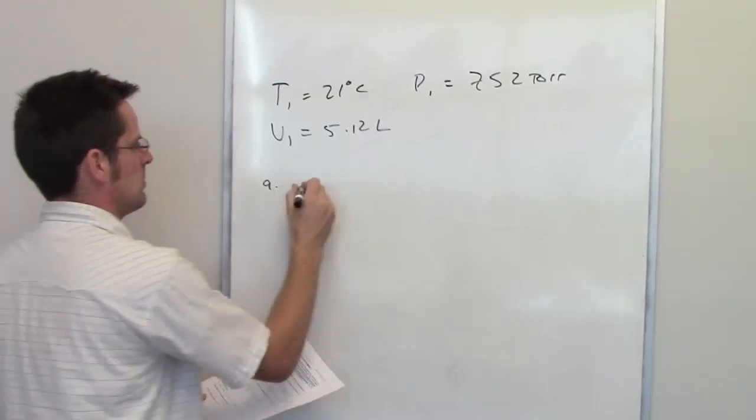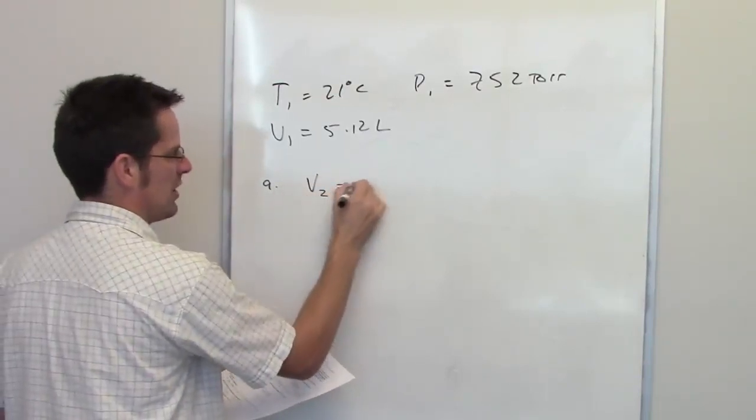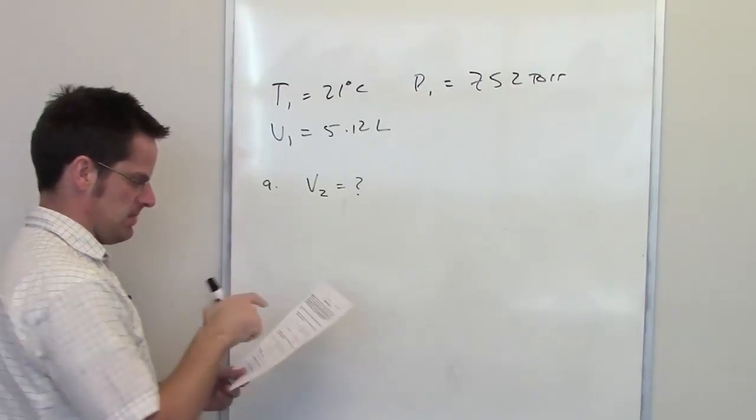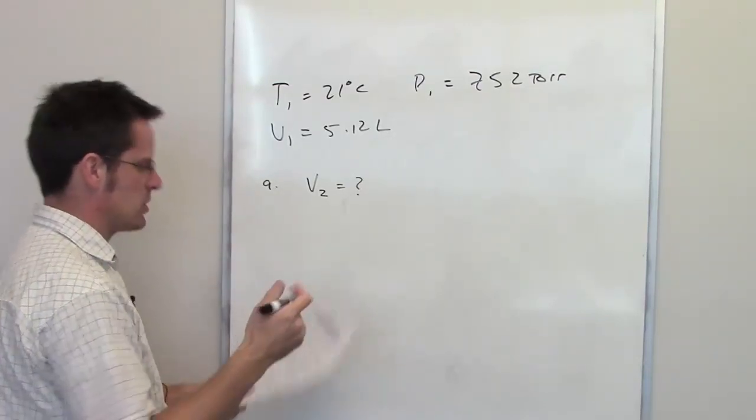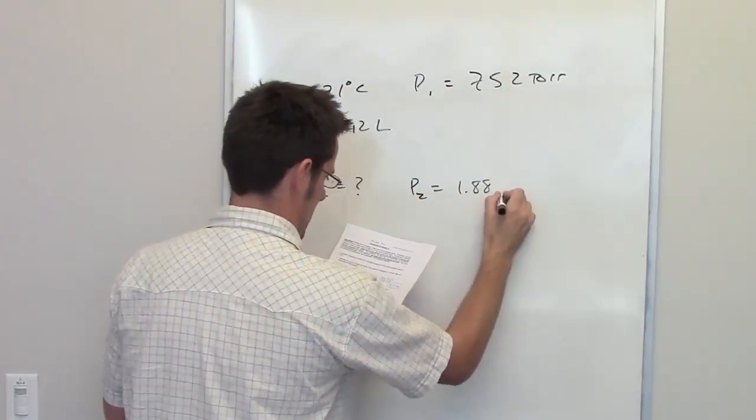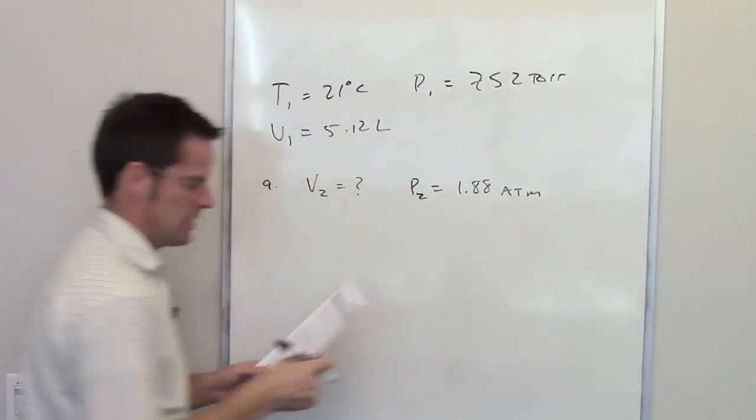In part A, it says calculate the volume, so V2, or V final, is what we're trying to determine if the gas will occupy if the pressure is increased to, so in other words, P2 is going to be 1.88 atmospheres while the temperature is held constant.